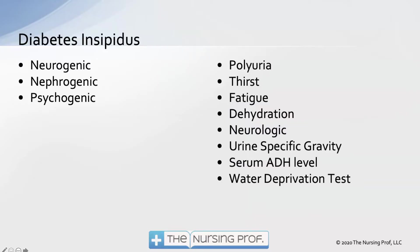In diabetes insipidus, the first of our two problems, we don't have enough antidiuretic hormone — the opposite of SIADH, which involves too much. Without anti, the patient is diuresing. The symptoms follow from that: polyuria, thirst, fatigue, dehydration. Urine-specific gravity will show that the urine is very thin and not very concentrated.